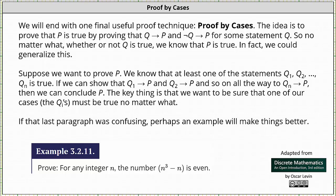We will end our lesson on proofs with one final useful proof technique called proof by cases. The idea is to prove that P is true by proving if P then Q and if not Q then P for some statement Q. So no matter what, whether or not Q is true, we know that P is true. In fact, we could generalize this.